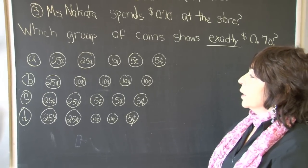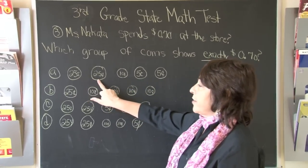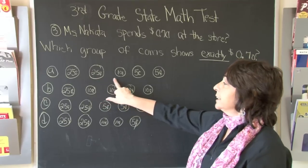The next coin is 10 cents, which gives us 25, 50. 50 plus 10, 60.